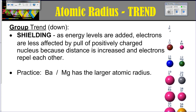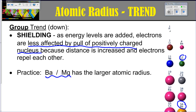Remember: as energy levels are being added, electrons are less affected by the pull of the fully charged nucleus. Therefore, they're going to be further away and the electrons are going to be able to repel each other more. For example, barium versus magnesium — which one has the larger atomic radius? Magnesium's outer valence electron shell is on a lower energy level, so there is less shielding, and therefore it's going to be smaller. Barium, being lower in the group, has more shielding and a larger atomic radius.